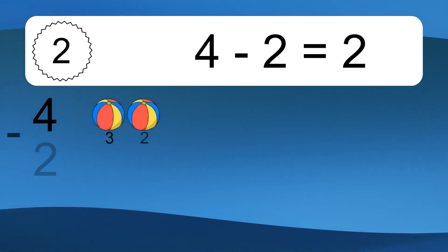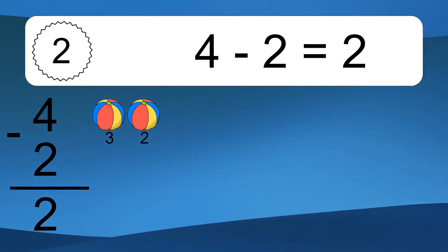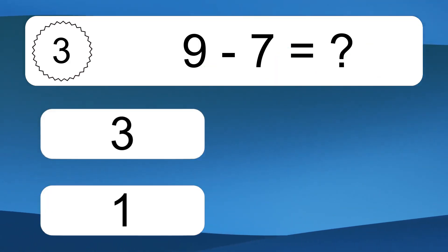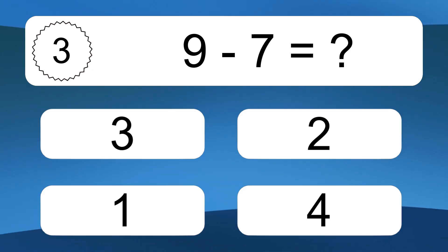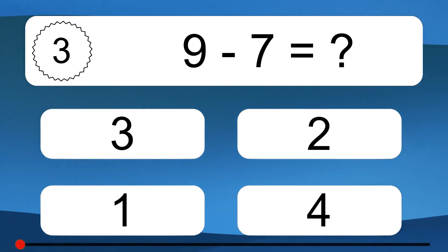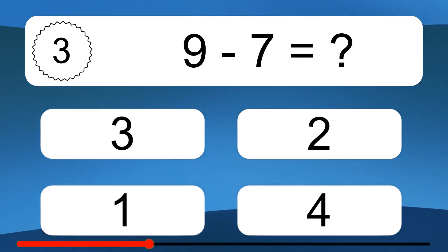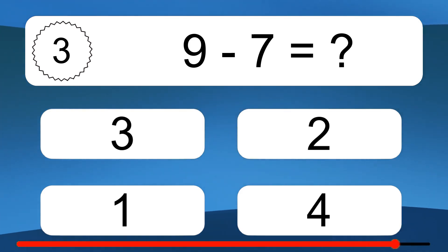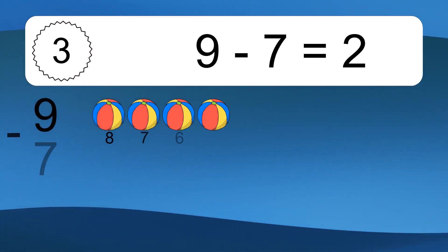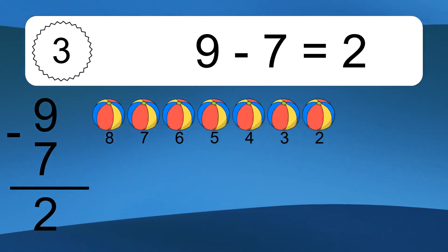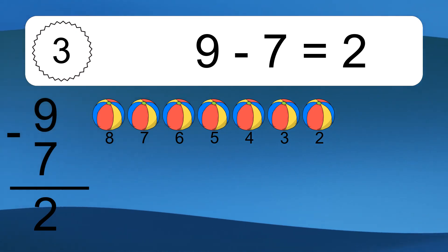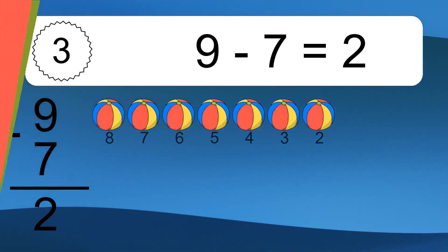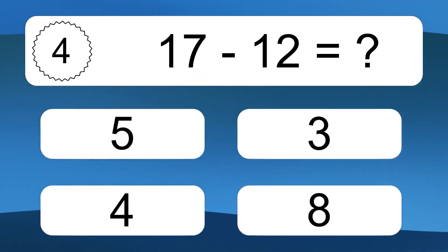4 minus 2 equals what? 4 minus 2 equals 2. Let's count it: 3, 2. 9 minus 7 equals what? 9 minus 7 equals 2. Let's count it: 8, 7, 6, 5, 4, 3, 2.